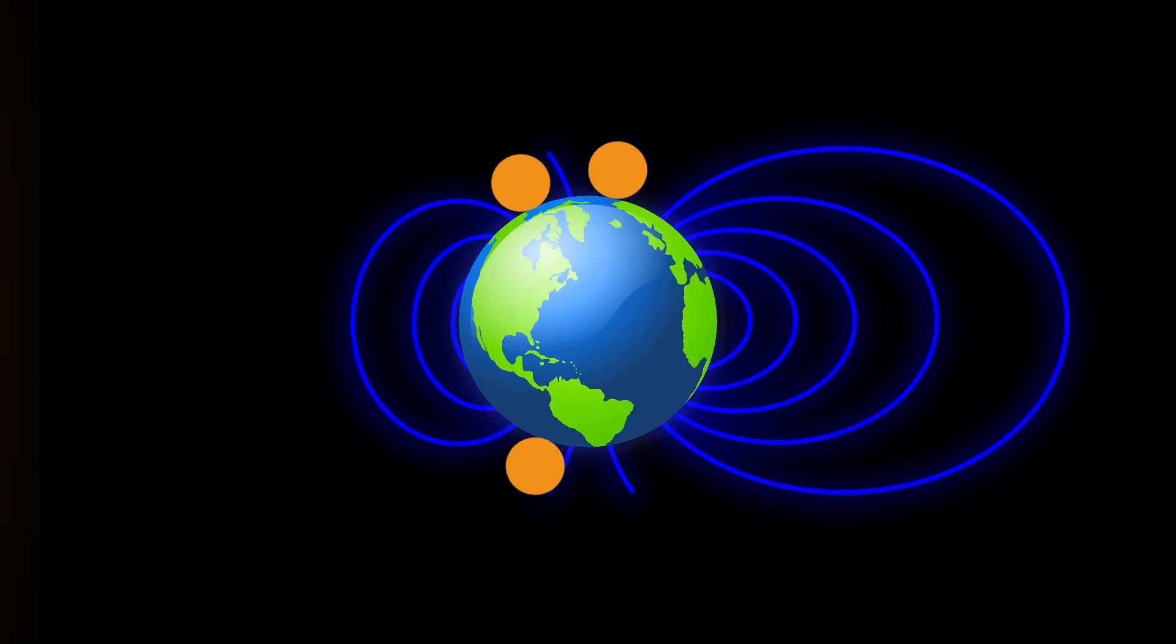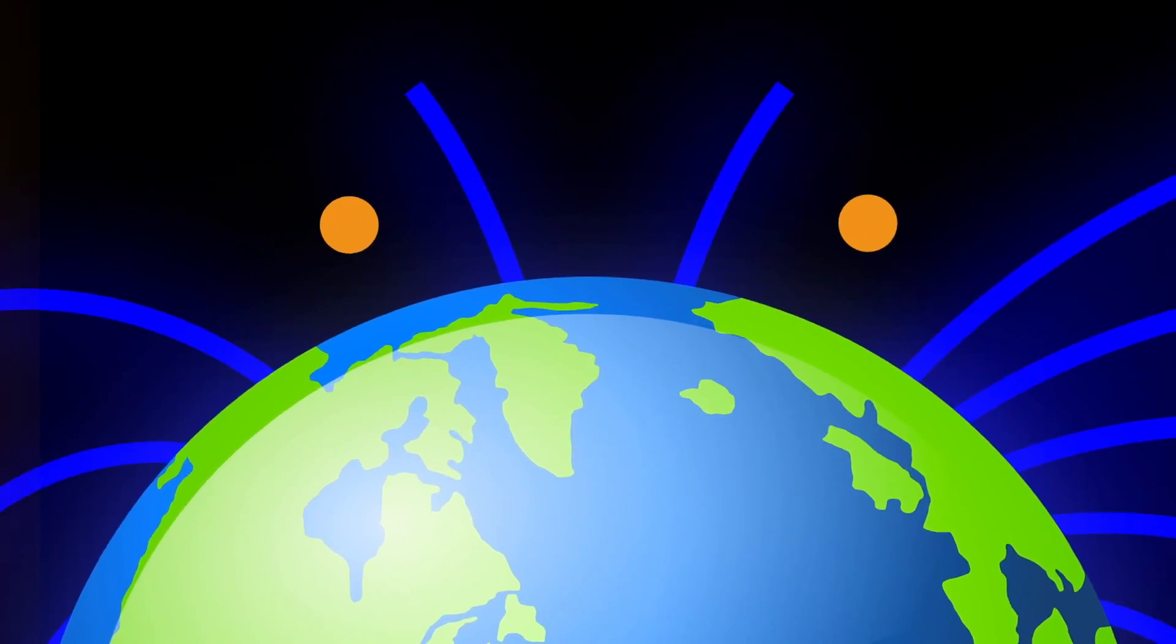Obviously, we don't want solar wind breaking through the magnetosphere of the poles because it would kill us. So what stops it? Earth's secondary defense is the upper atmosphere.